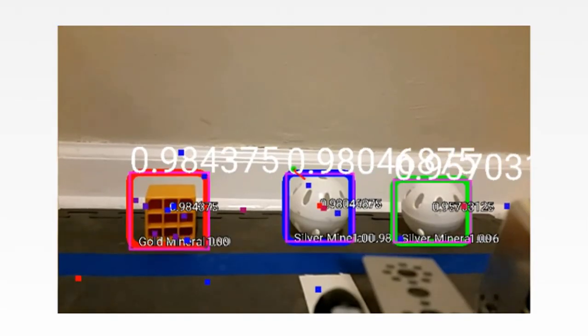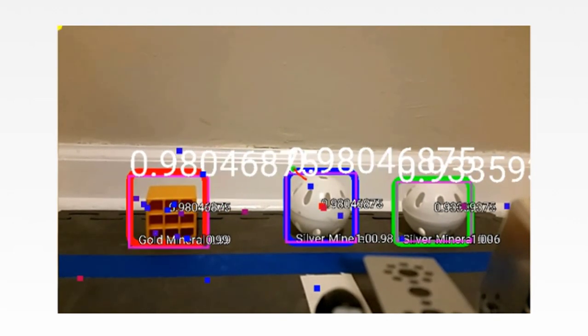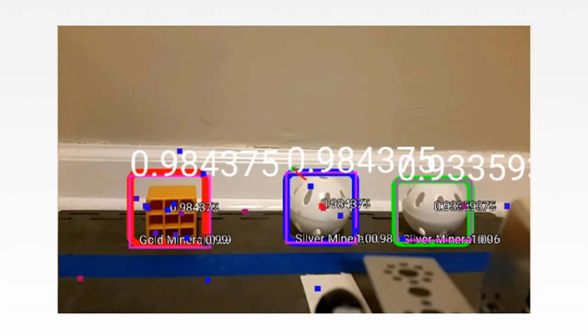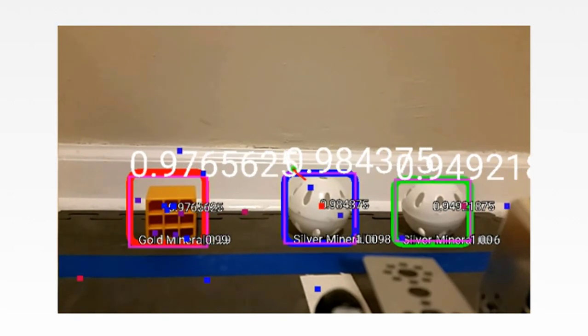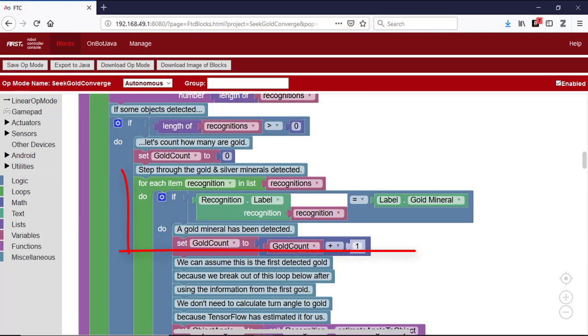At any particular time, the TensorFlow system will detect zero, one, or more objects. In the case of Rover Ruckus, the objects will be a mix of gold and silver minerals. We want to ignore the silver minerals and choose a gold mineral. Our example op-mode goes through a list of objects and focuses on the first gold mineral on the list.